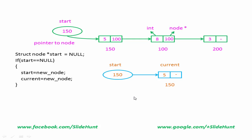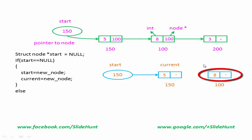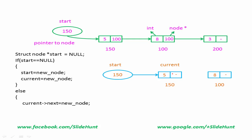If the start variable is not NULL, then suppose we want to insert another node with address 100. We check 'if (start == NULL)' — no, it is false — so it will execute the else block. This is the current node and this is the new node. We give the address of new_node to current's next field: 'current->next = new_node'. So now this part contains 100. After inserting the node, new_node becomes the current node: 'current = new_node'. And the insertion is completed.